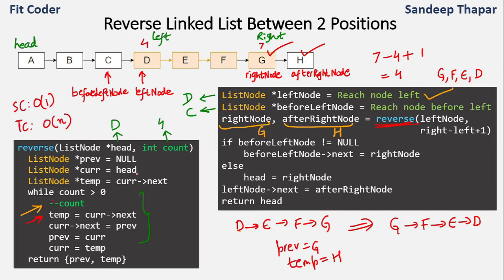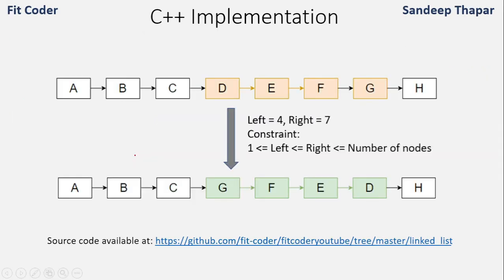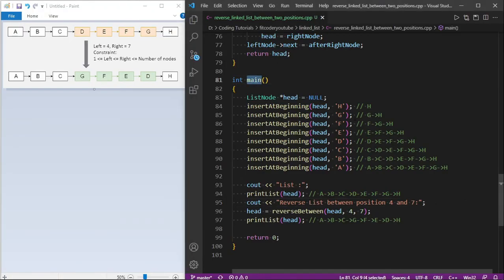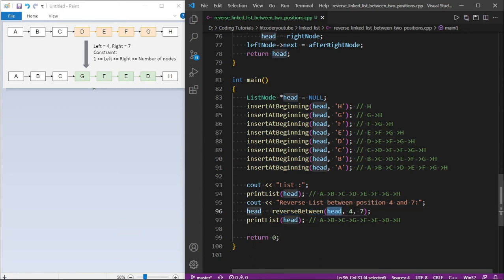Now that we understand the algorithm, let's look at the implementation. All source code is available in my GitHub repository, the link for which is shown on screen and in the description. In the main function I've created a linked list from A to H, then I call the function reverseBetween passing the head node, left value 4, and right value 7 — meaning we reverse from node D to node G.